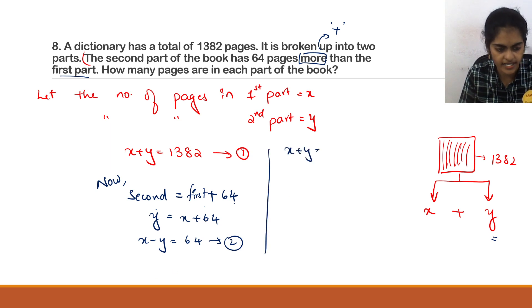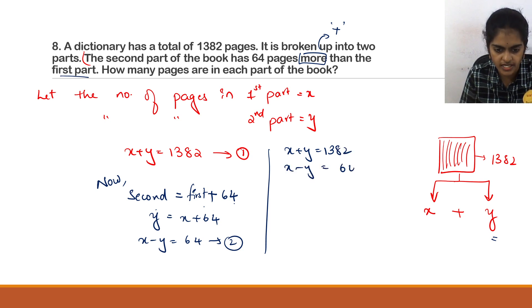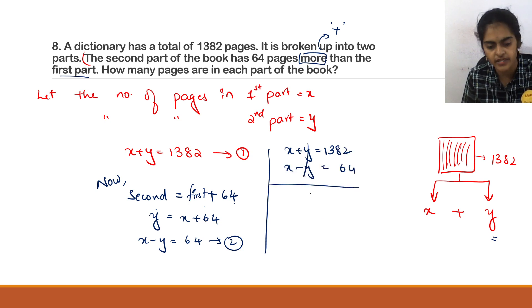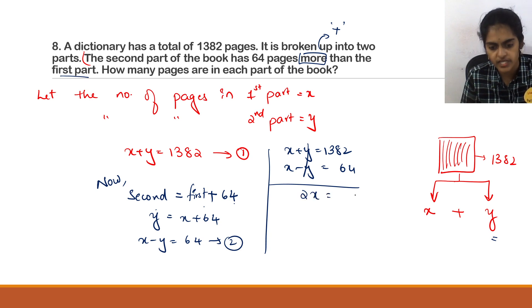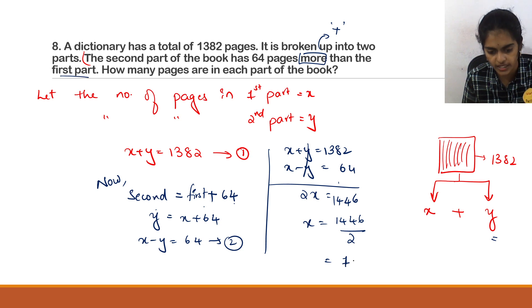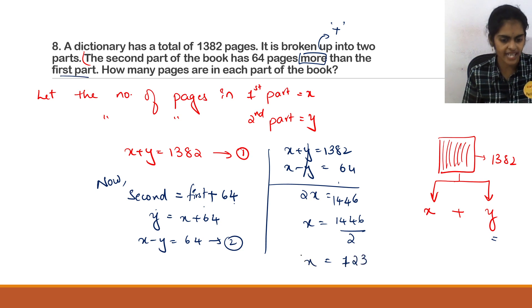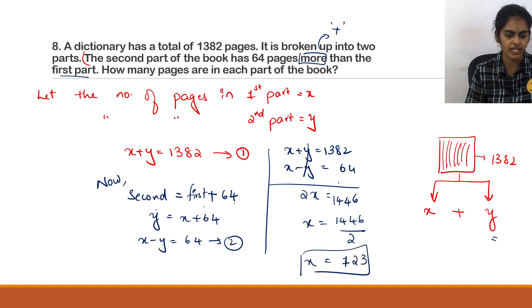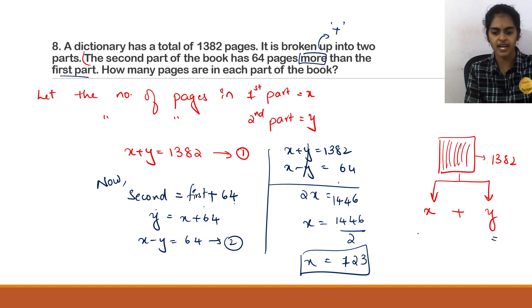Solving: x + y = 1382 and x − y = −64. Adding: 2x = 1446, so x = 723. The first part has 723 pages.